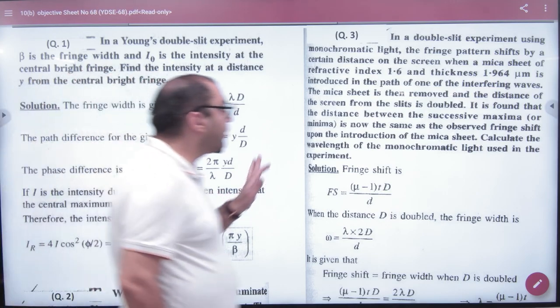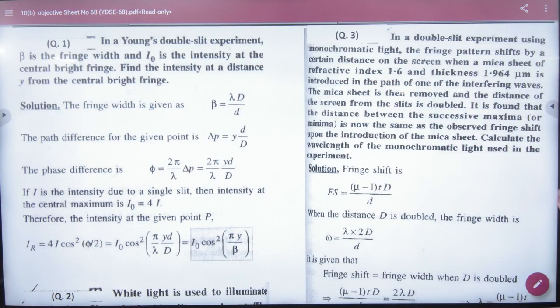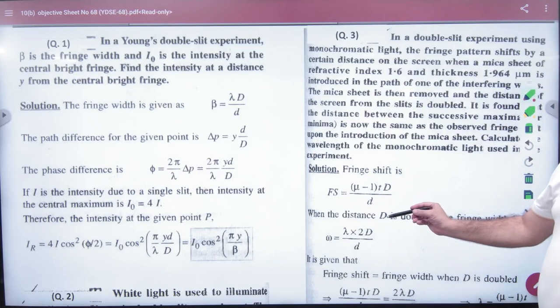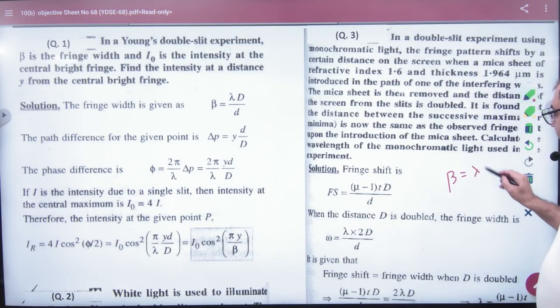In a double slit experiment, monochromatic light is used. Fringe pattern shifts by a certain distance on the screen when a mica sheet of refractive index 1.6 and thickness 1.964 micrometer is introduced in the path of one of the interfering waves. It means there are two YDS experiments, two waves. We have put a glass slab on one side, mica sheet, which is transparent. So we have that last time theory, if there is a glass slab, then the fringe pattern shifts. How much distance it shifts is called fringe shift.